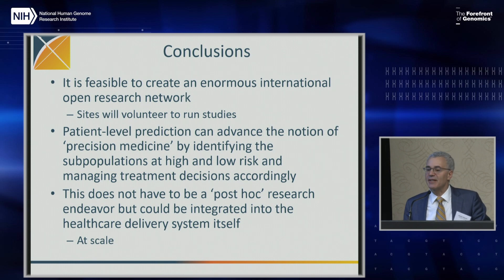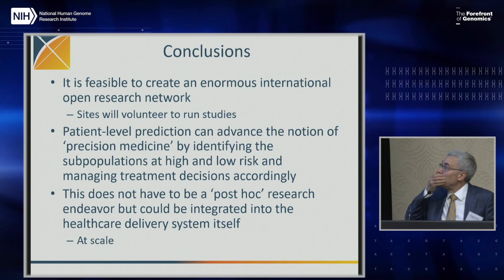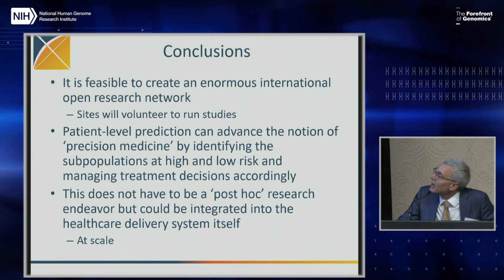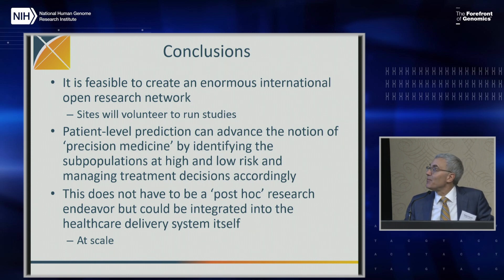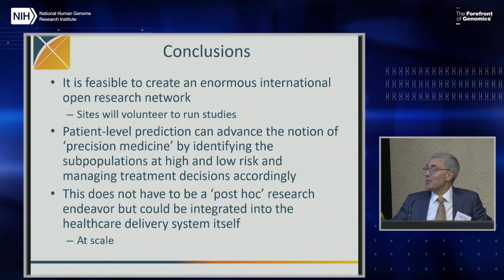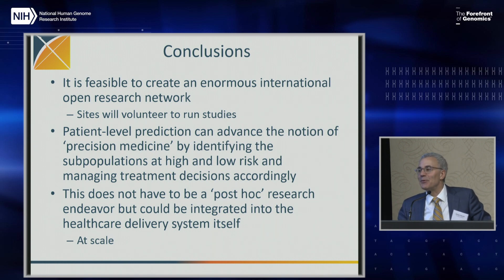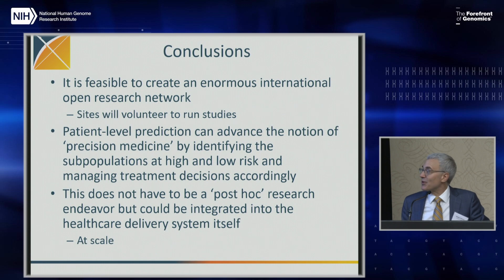In conclusion: it's feasible to create an enormous international research network where sites volunteer to run studies with no central payment. Patient-level prediction can advance precision medicine by identifying subpopulations at high or low risk. And as was mentioned in earlier talks today, this doesn't have to be post-hoc research — it can be integrated into a healthcare delivery system, though the hard part is figuring out which models to use and how to integrate them.